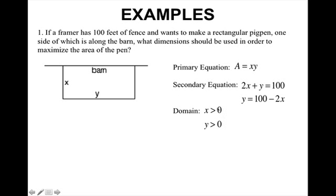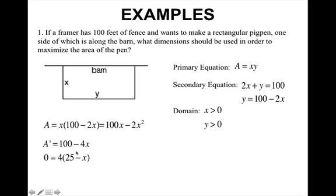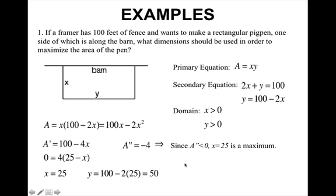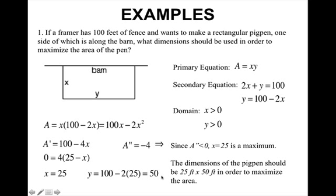I find my domain — both x and y have to be greater than 0 since they can't be negative. I rewrite my area in terms of x, distribute, find my derivative, and set it equal to 0 to find critical values, giving x equals 25. I check whether this maximizes area using the second derivative test. The second derivative equals negative 4, which is negative, so x equals 25 is a maximum. Plugging 25 in for x to find y gives y equals 50. So the dimensions of the pig pen should be 25 feet by 50 feet to maximize area given 100 feet of fence.